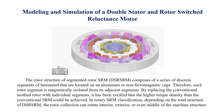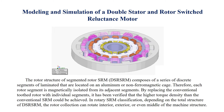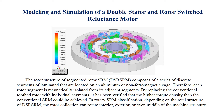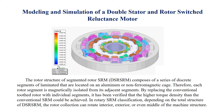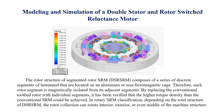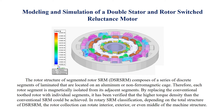The rotor structure of segmented rotor SRM composes of a series of discrete segments of laminated material that are located on an aluminum or non-ferromagnetic cage. Therefore, each rotor segment is magnetically isolated from its adjacent segments. By replacing the conventional toothed rotor with individual segments, it has been verified that higher torque density than the conventional SRM could be achieved.